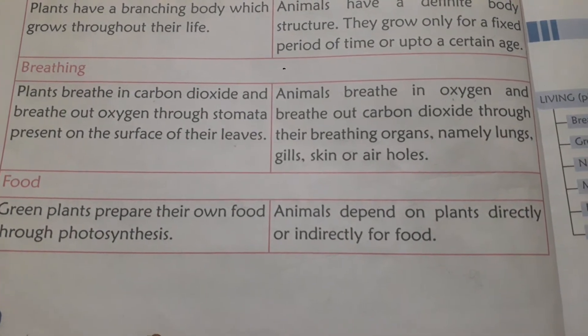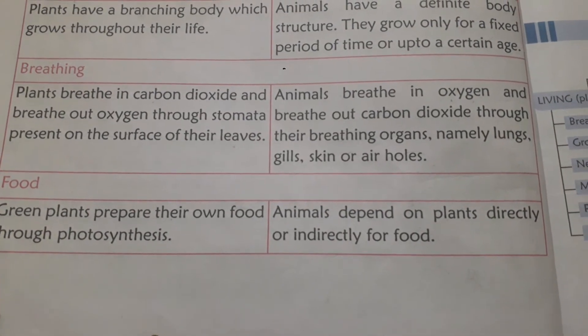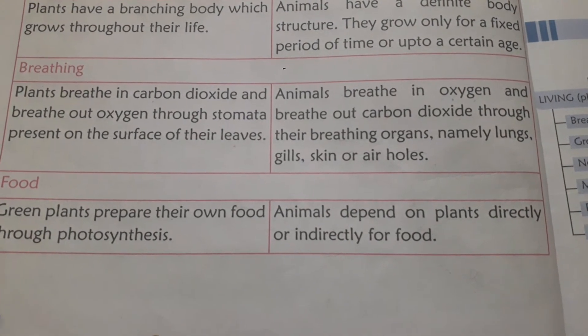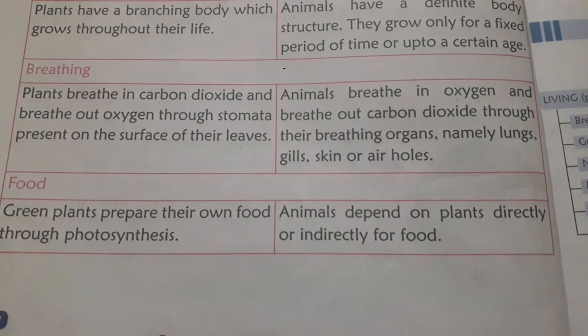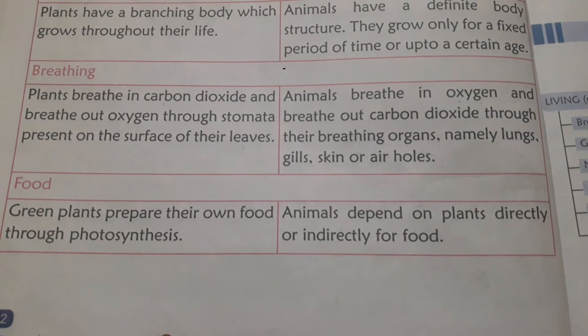The fourth difference is food. Green plants prepare their own food through photosynthesis, whereas animals depend on plants directly or indirectly for food.